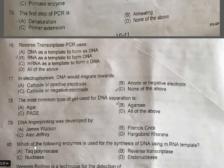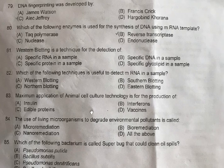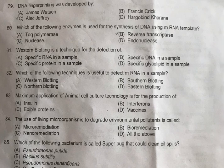Question 80: Which of the following enzymes is used for synthesis of DNA using a messenger RNA template? — A: Taq polymerase, B: Reverse transcriptase, C: Nuclease, D: Endonuclease. The correct one is B, Reverse transcriptase. Question 81: Western blotting is a technique for detection of — A: Specific RNA in a sample, B: Specific DNA in a sample, C: Specific protein in a sample, D: Specific glycolipid in a sample. The correct option is C, specific protein in a sample.